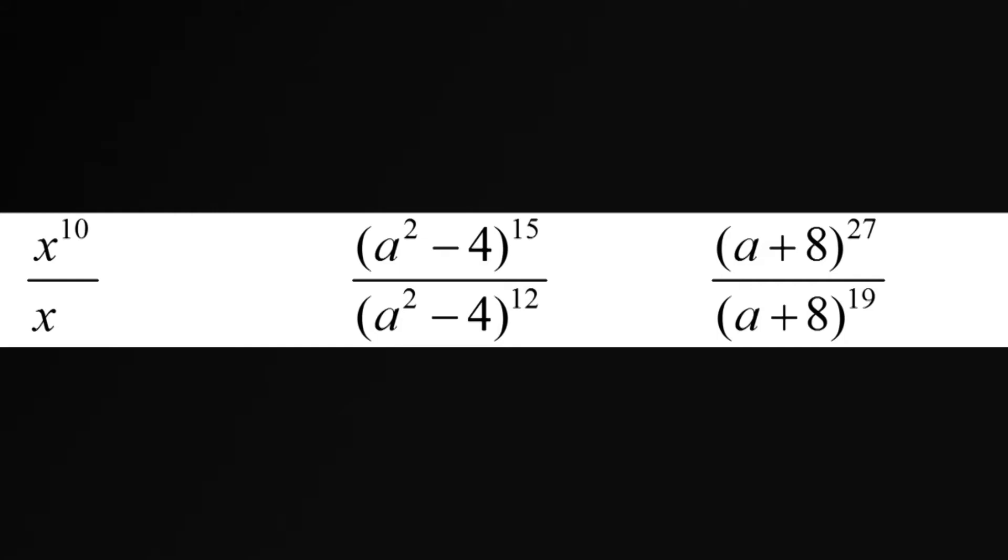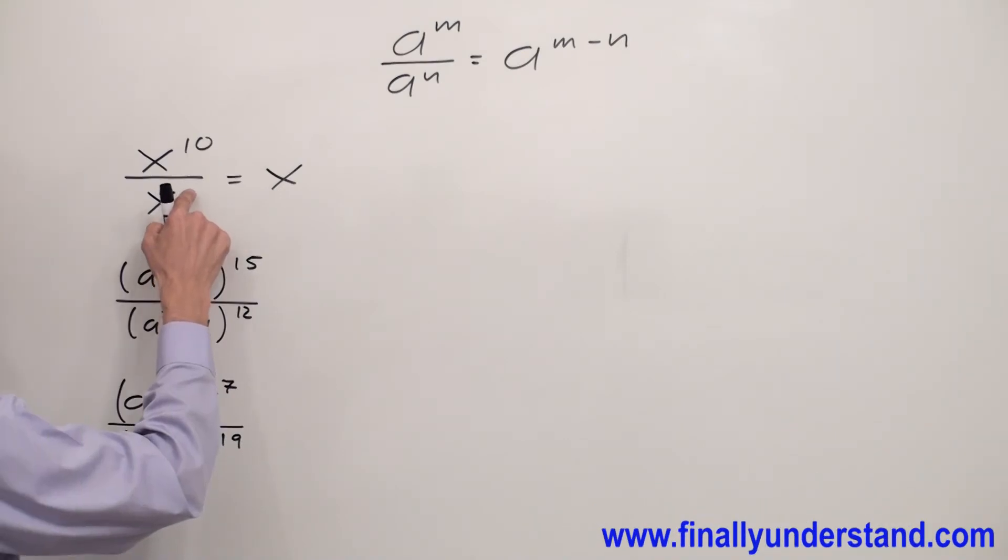The common base is x. Remember, anytime we do not have any exponent next to the variable or number, there is always an invisible one. Let's make this invisible one visible.